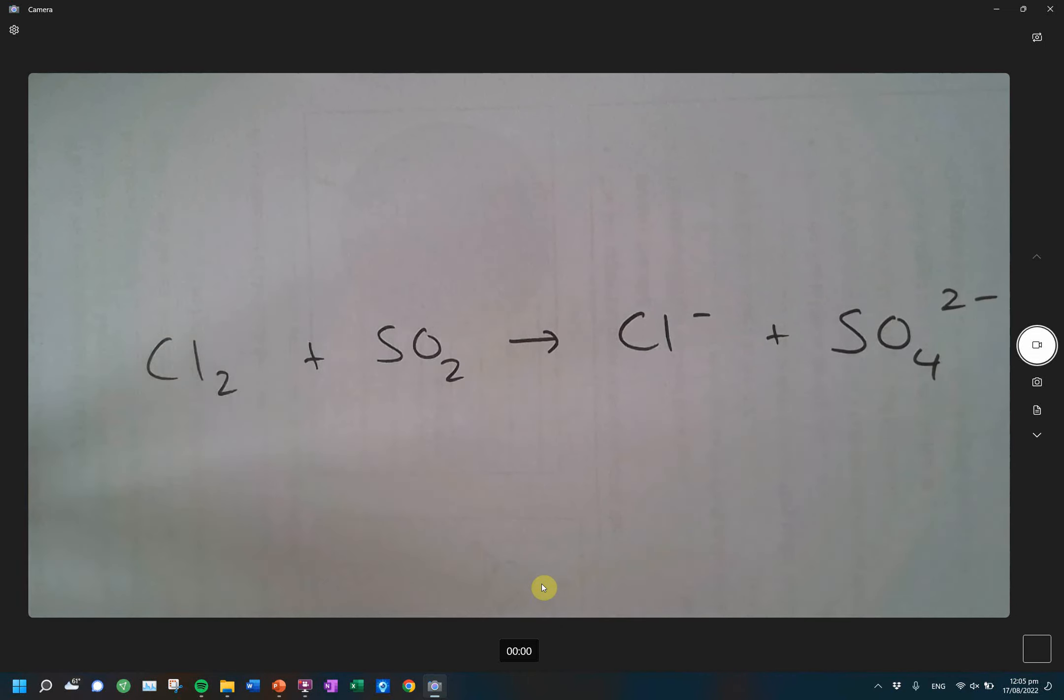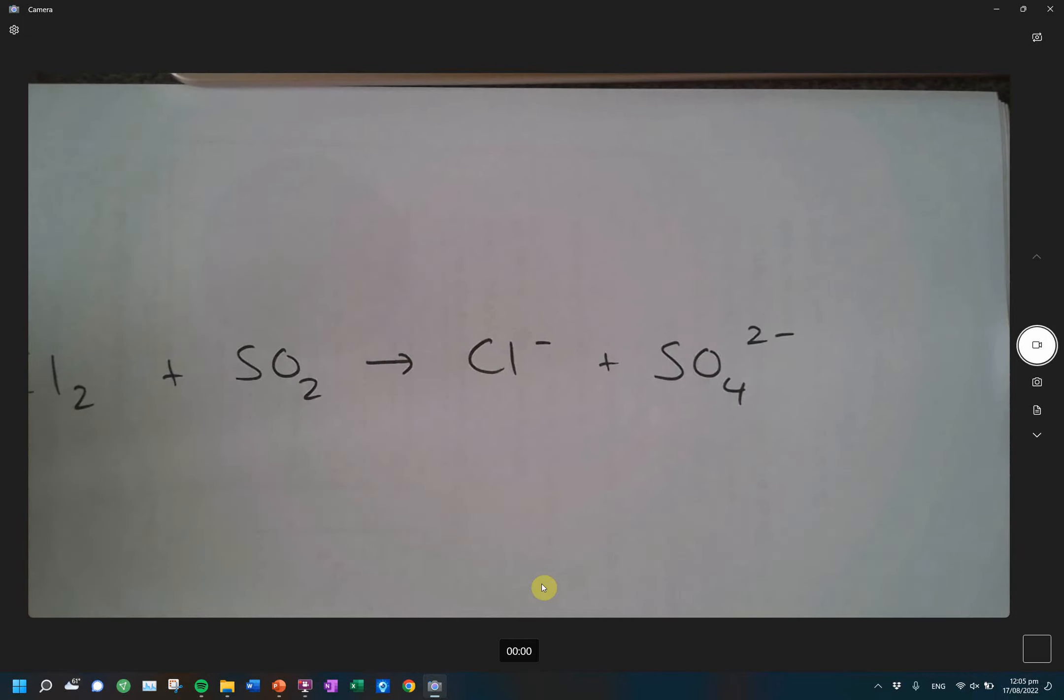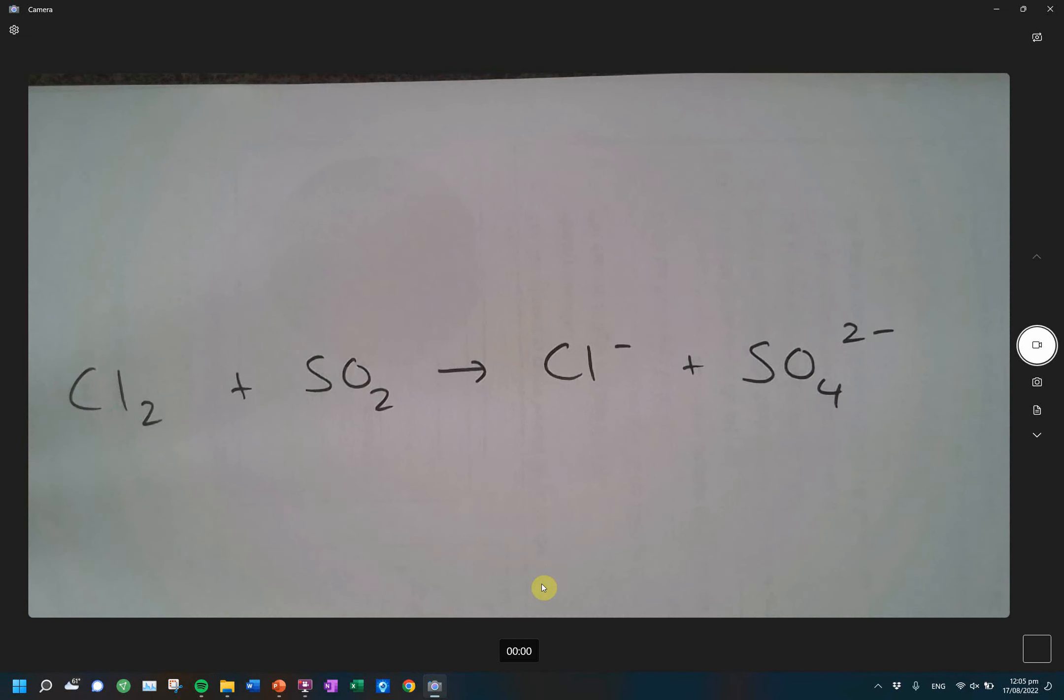So when you have a full equation like this, you need to unpack it and figure out how the oxidation numbers are changing. So in the do now example, you guys could clearly see where the electrons were and that helped you figure out which one was oxidation or if it was reduction. In reality, we're going to have full equations and you won't be able to see the electrons.